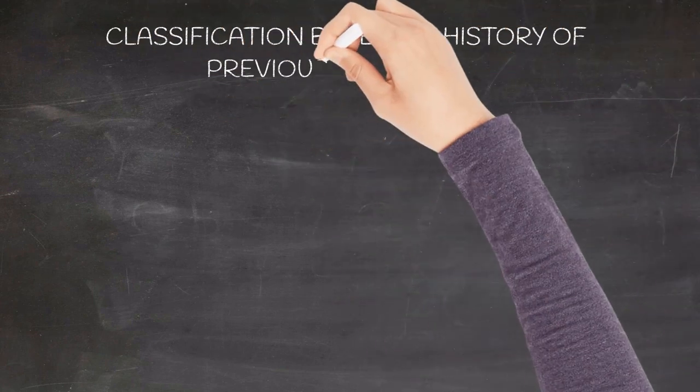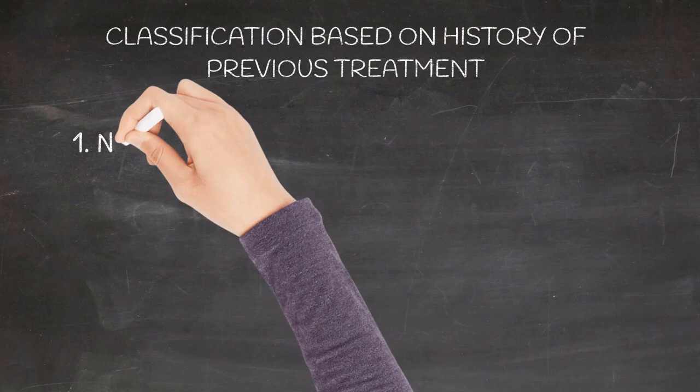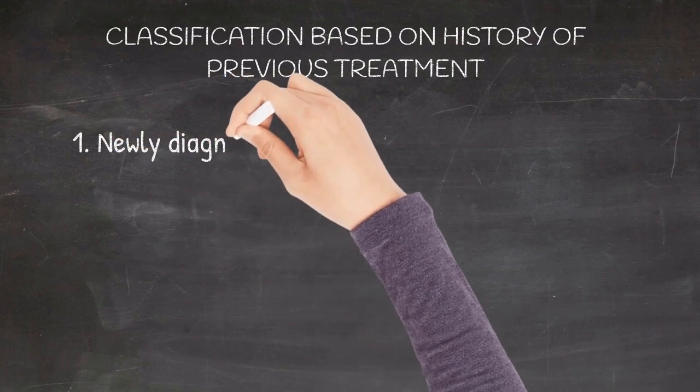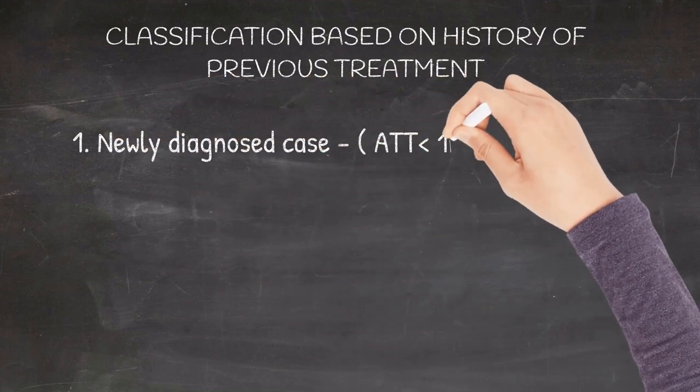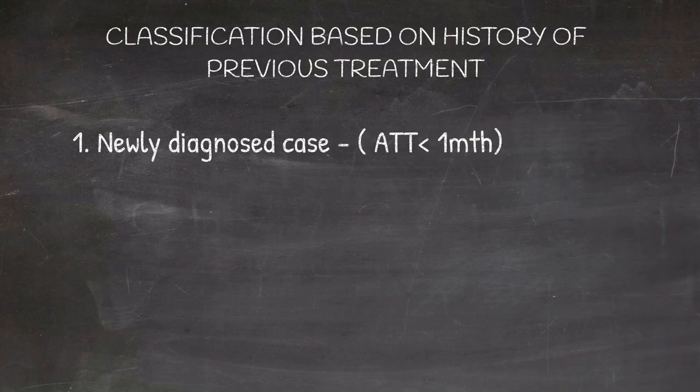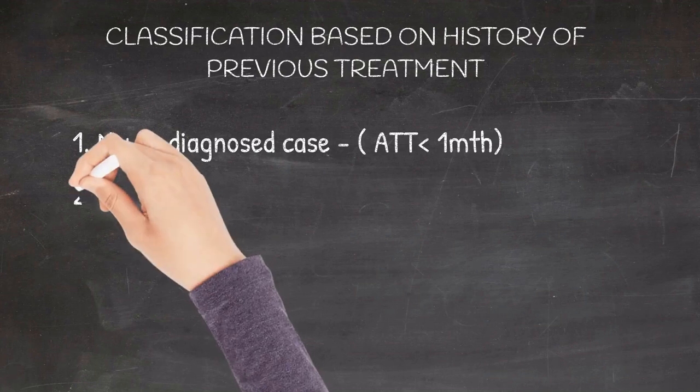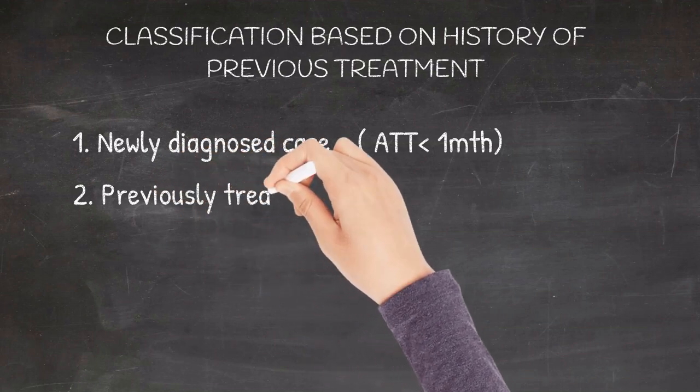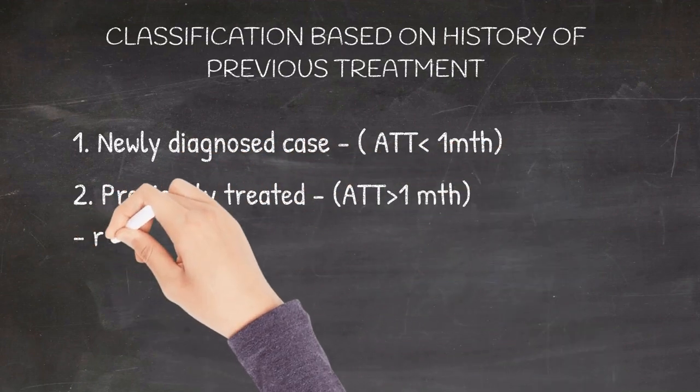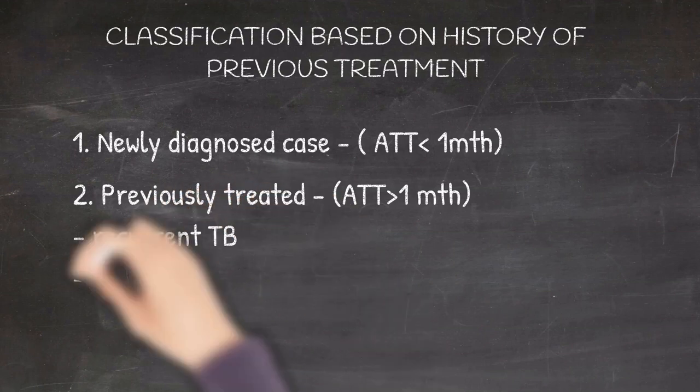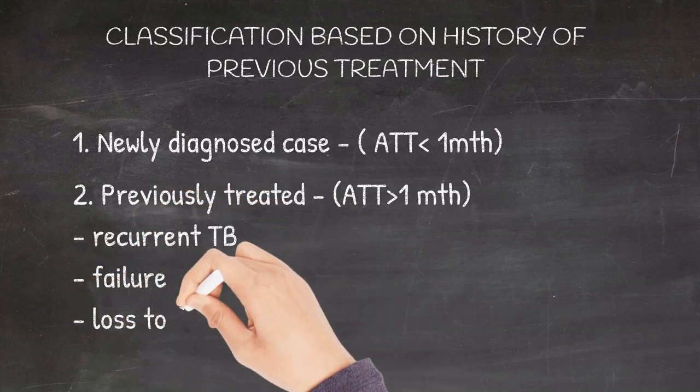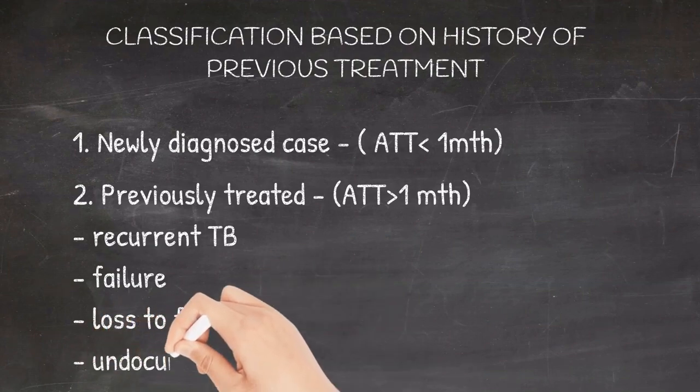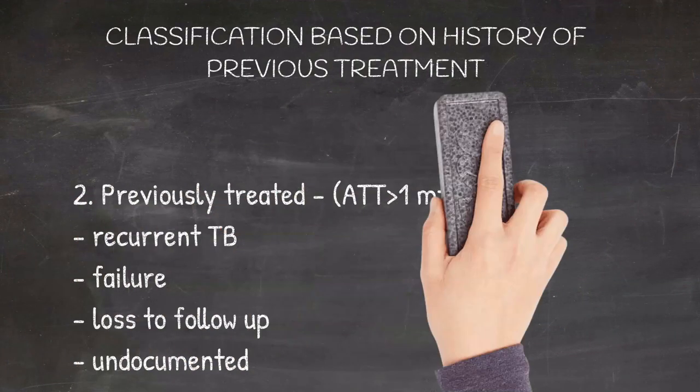Classification based on history of previous treatment of tuberculosis: It can be a newly diagnosed case of tuberculosis. That is, the patient has never taken anti-TB drugs in his life or even if he has taken ATT is just for a period less than one month. Previously treated tuberculosis, that is the patient has taken ATT for more than one month. It includes recurrent tuberculosis, failure of therapy at the end of the most recent course of anti-tuberculosis drugs, loss to follow-up, and undocumented, that is the patient was previously treated but the outcome or the treatment is undocumented.